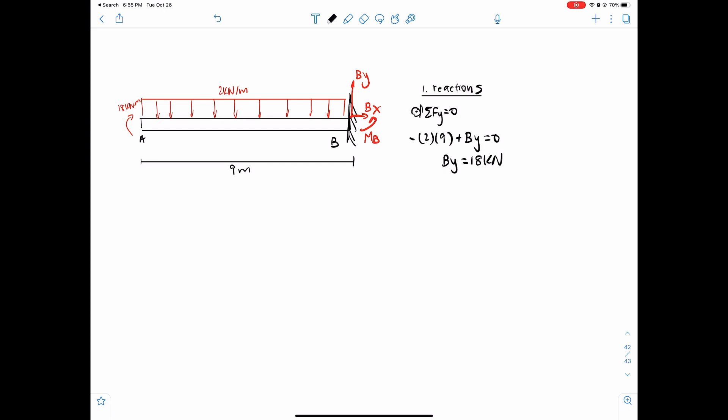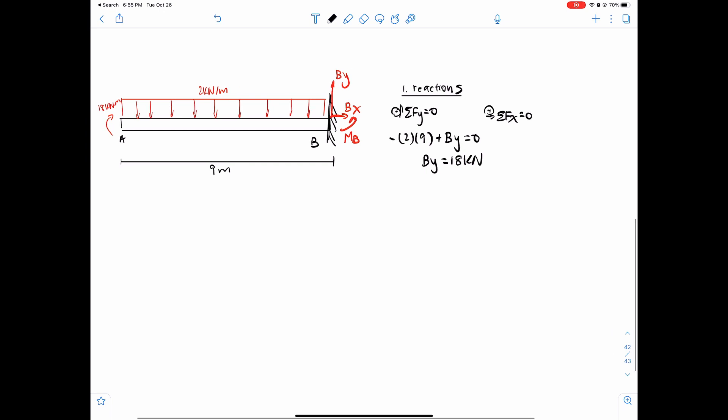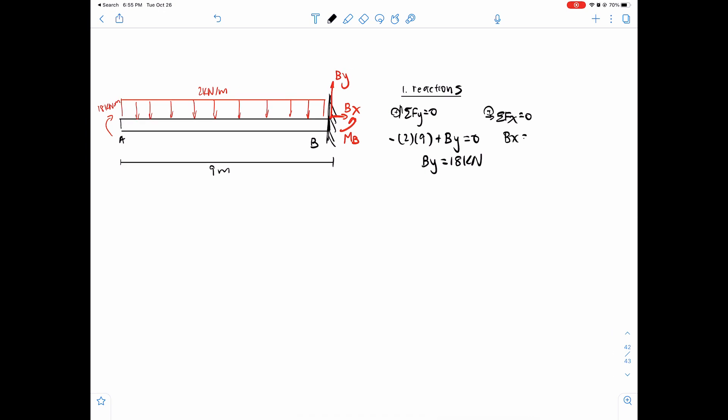So that's your By. What about Bx? I mean, MB. Well, we can do Bx too. But since there's no horizontal forces in the system, you can kind of tell Bx would just be equal to 0.